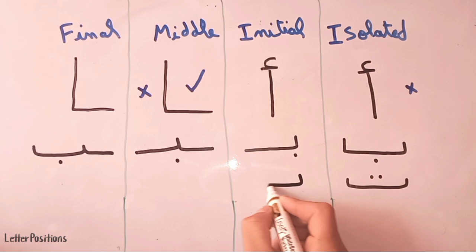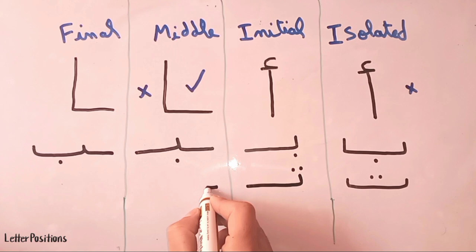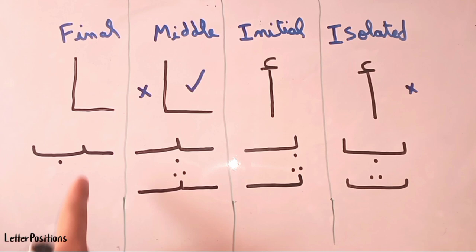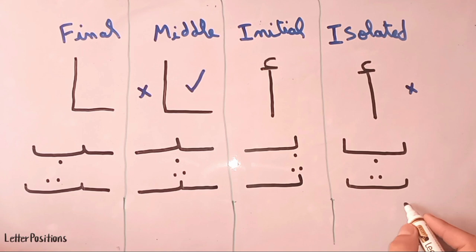The next letter is harfu al-ta'. It's the same shape as al-ba'. We start from here, turn, and put two dots on the top of the letter. In the middle form, we go up and go straight with two dots on top. Same shape as ba'.